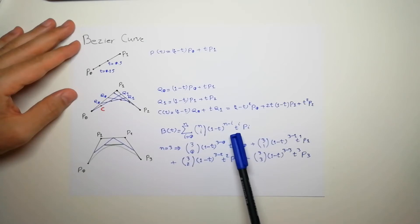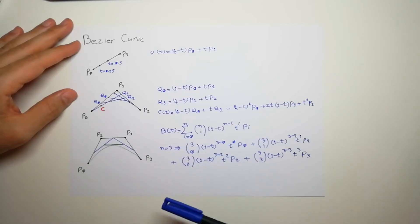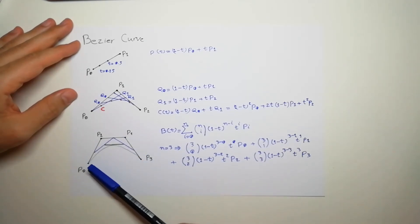Power n minus i multiplied by t power i. So if I go to the higher degrees like four points, I will get the curve with a polynomial degree three like this one. So I put the n equals three here and I will get this equation like this.